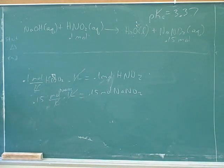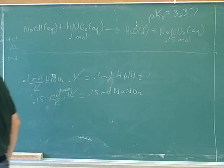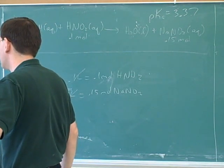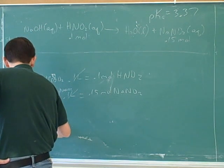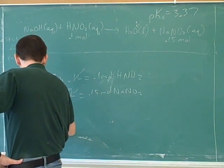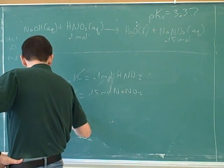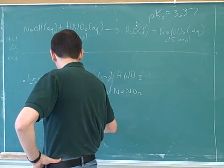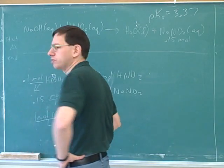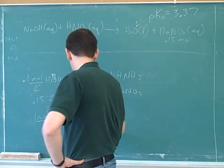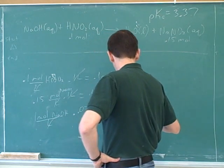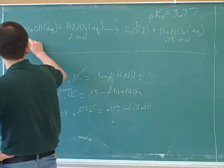All right, and now how about the sodium hydroxide? How many moles of that? 0.02? Let's see. So we've got one mole of sodium hydroxide per liter because it's one molar. And we have 0.02 liters, which is the 20 milliliters. So it looks like you were right. 0.02 moles of sodium hydroxide.